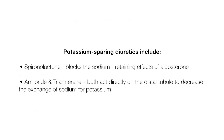Potassium-sparing diuretics include spironolactone, which blocks the sodium-retaining effects of aldosterone, as well as amiloride and triamterene, which both act directly on the distal tubule to decrease the exchange of sodium for potassium.